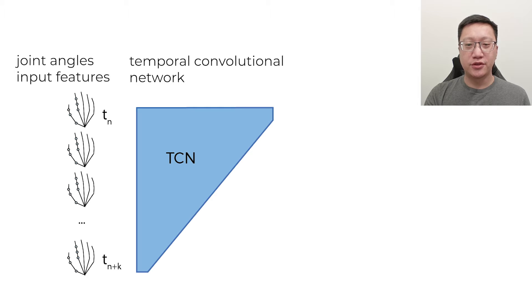Our training pipeline is straightforward. We use joint angles as input features to a temporal convolutional network to generate gesture predictions.